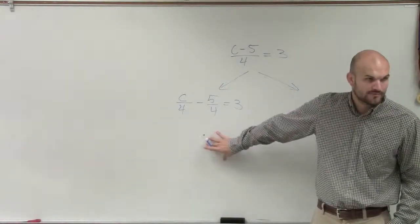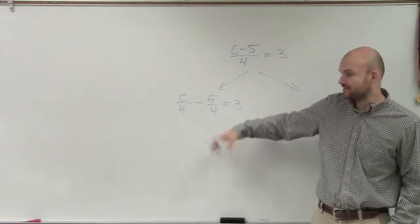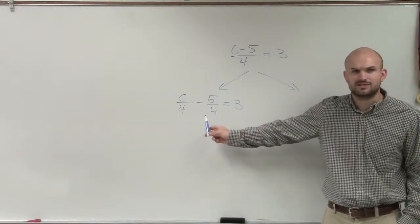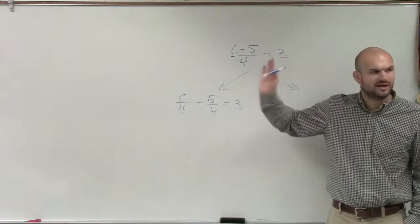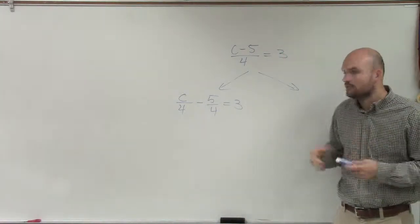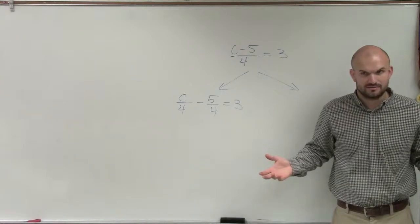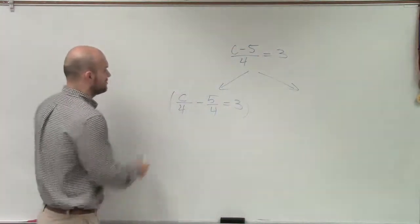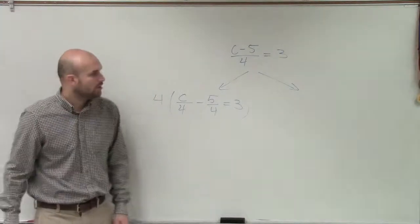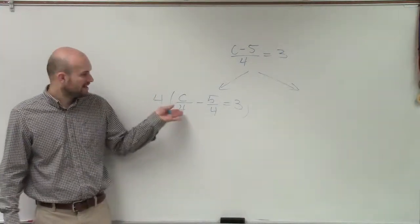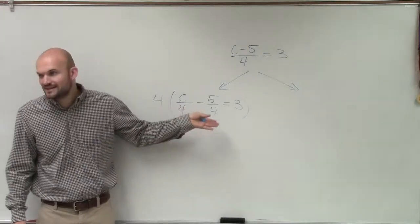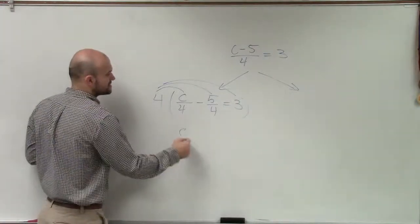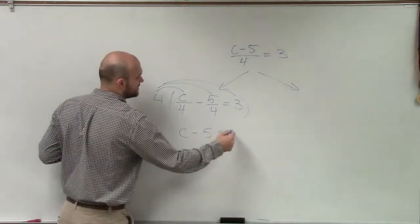And there's nothing wrong with solving a problem with fractions. We can easily do this. Does anybody know what I would do, though, if I wanted to solve this with fractions? Well, first of all, nobody likes solving with fractions, right? So if I was going to do this with fractions, the first thing I would do is multiply my whole equation by 4. Why? Because I don't want to have 4 in the denominator — I don't want to have anything in the denominator. So if I multiply by 4, I'm just left with C minus 5 equals 12.